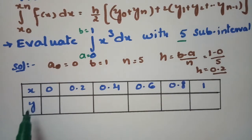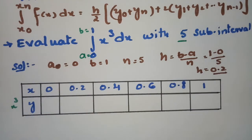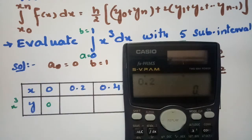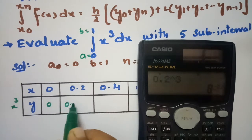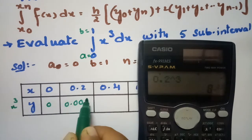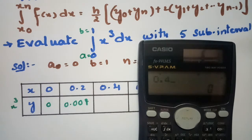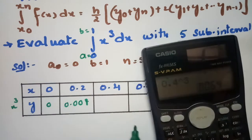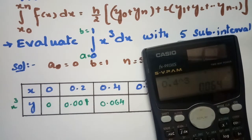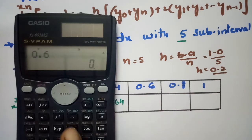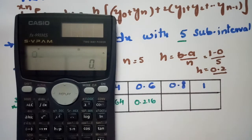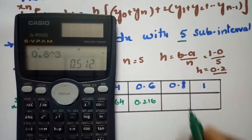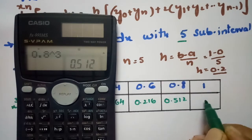Here y is equal to x³. So 0³ is 0, the next value is 0.2³ which equals 0.008, then 0.4³ which equals 0.064, then 0.6³ which equals 0.216, then 0.8³ which equals 0.512, and finally 1³ equals 1.